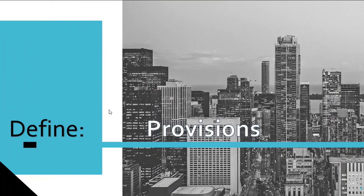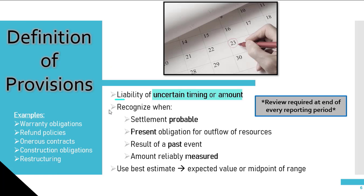Now let's discuss what makes a provision different from an ordinary liability. A provision is a liability that is uncertain in timing or amount. In our earlier example, company ABC had to pay back a $50,000 loan in January. This was a liability, not a provision, because both the timing and the amount were certain. Now let's say company ABC sells its products with warranty. The amount of warranty claims and when they will be claimed are uncertain — thus, it is a provision.